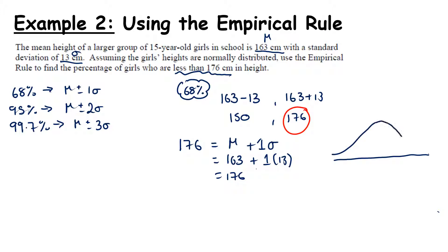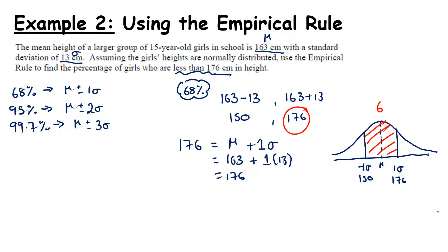Here's my normal distribution. The center is the mean. One standard deviation above gives 176, and minus one standard deviation gives approximately 150. Between these two lines I have approximately 68% of the data.